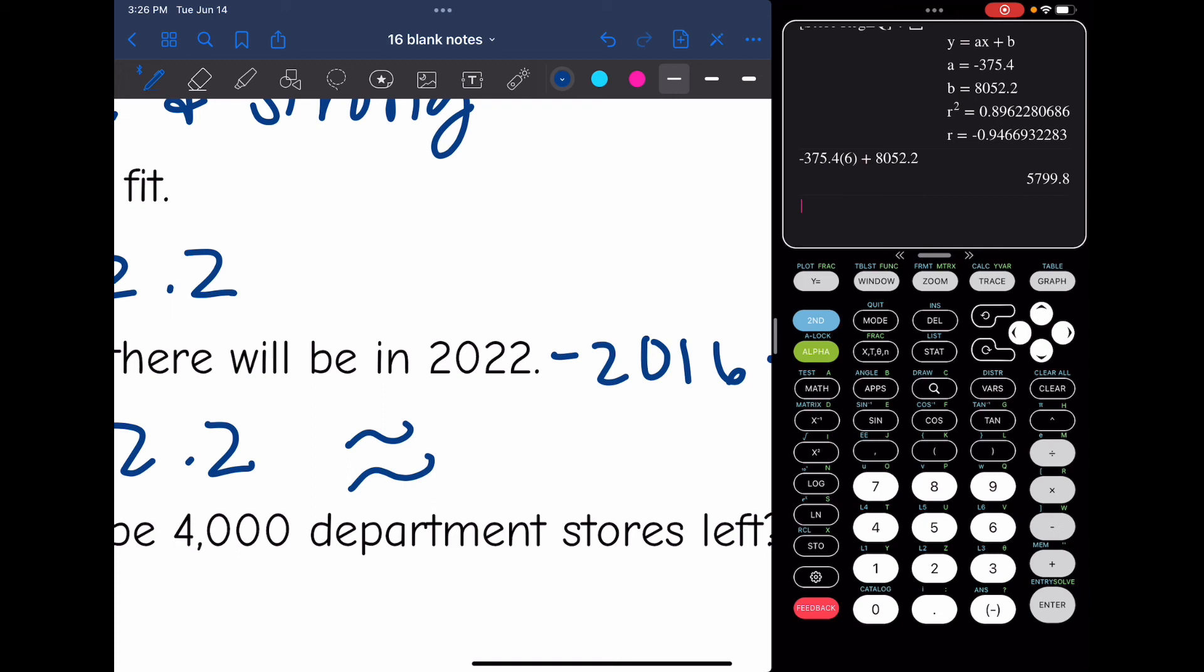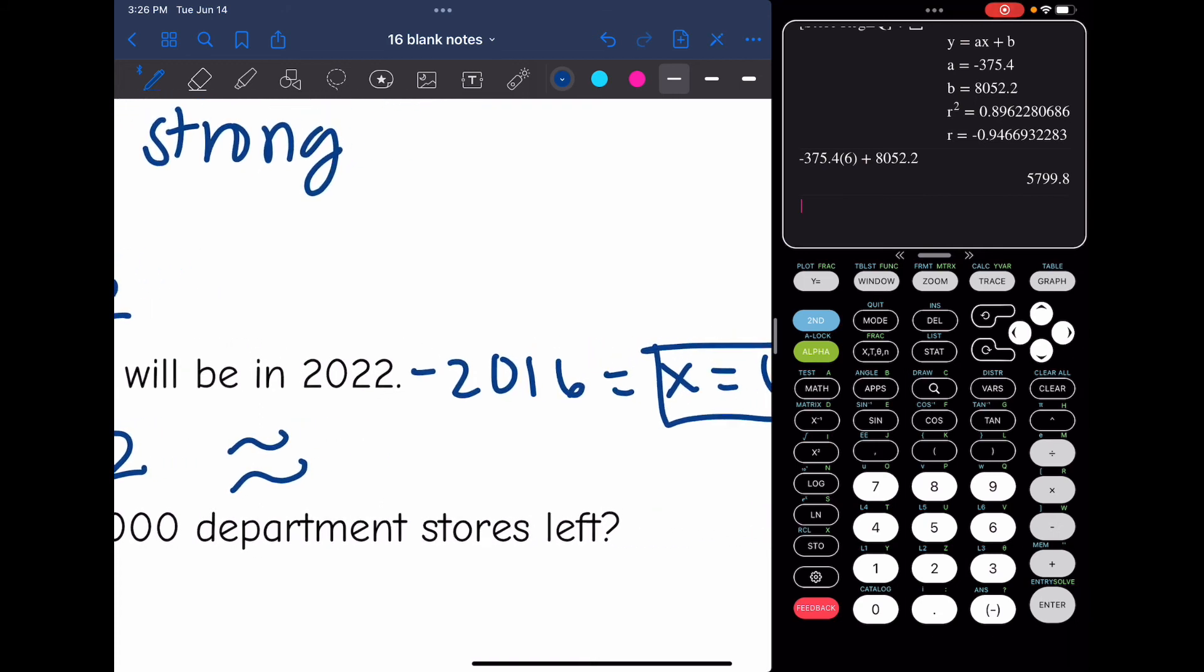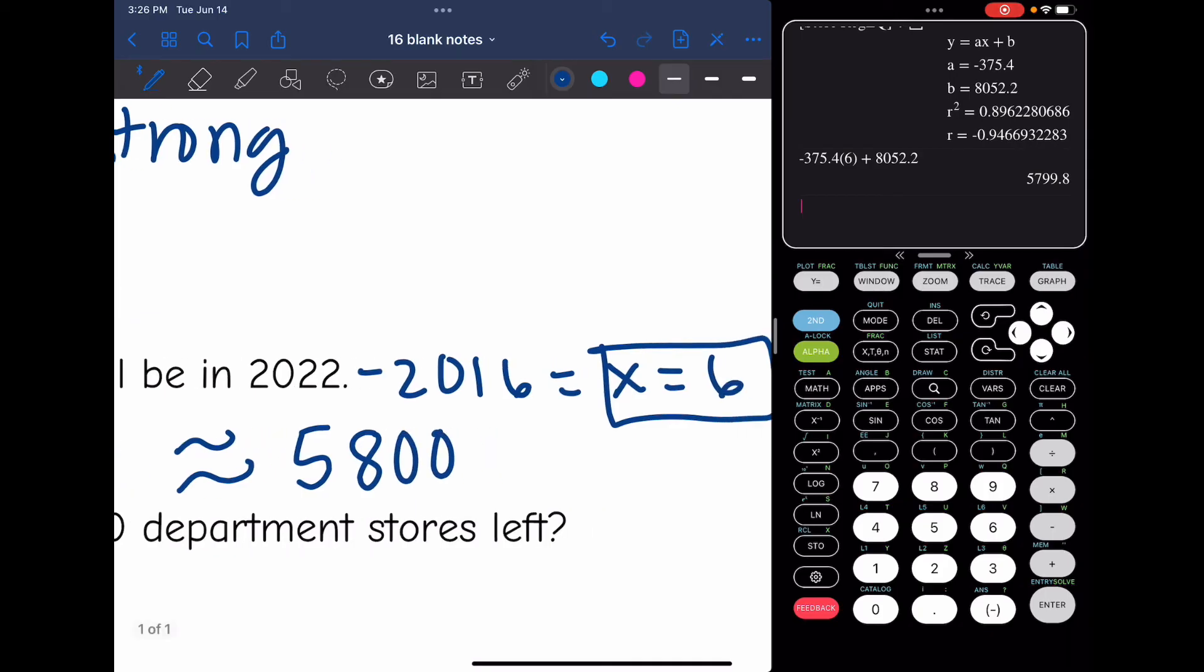So after six years in 2022, there will be about, we are going to round that to the nearest whole number because you're not going to have a partial store. So we would say about 5,800 stores.